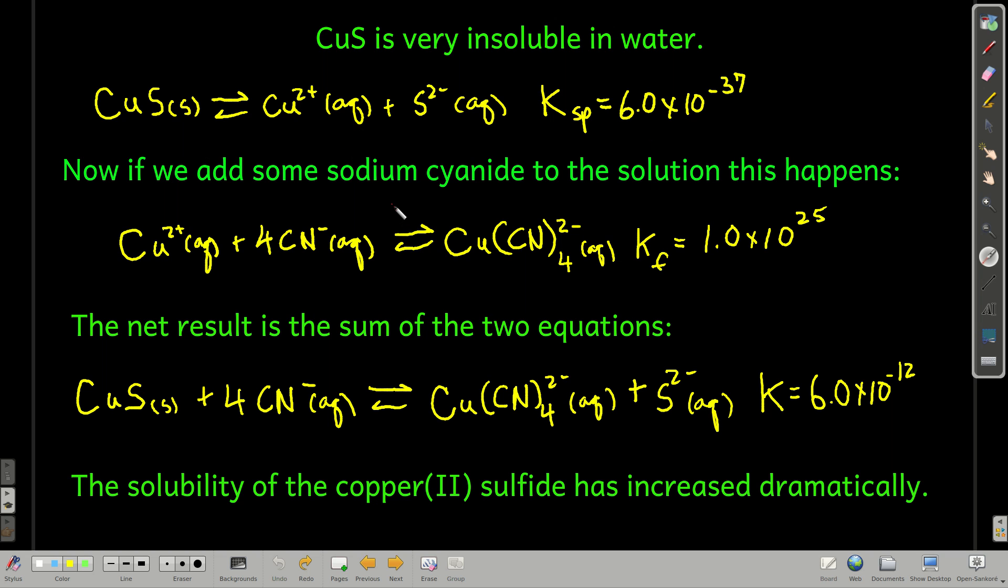Now, it ends up that copper(II) forms a complex with the cyanide ions. So if we add some sodium cyanide, which is just a source of cyanide, we get this equilibrium occurring, the formation of this complex ion between copper(II) and cyanide. The Kf for this is 1 times 10 to the 25th.